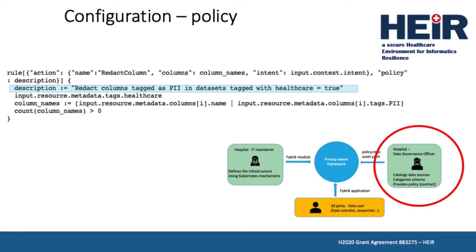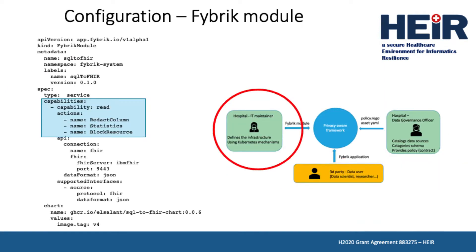Now we see an example of a policy definition specified in a language called REGO. This policy will cause the FHIR policy manager to return a decision of redact column on the FHIR attribute that was categorized as PII. This YAML defines a FHIR module for a connection between a FHIR source and JSON output, and it advertises the redaction items it knows how to do, such as redact column or block resource.